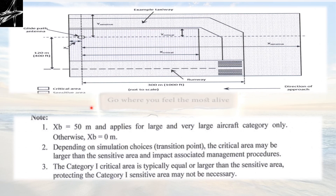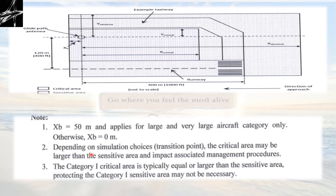One area that remains is behind the Glide Path. The Glide Path antenna is here, the runway and threshold are ahead, and the aircraft is heading in to land — so all previously defined areas are in front. The area behind is defined as Xb: Xb is 50 meters and applies for large and very large aircraft categories only; otherwise Xb is 0. Depending on simulation choices and transition point, the critical area may be larger than the sensitive area and impact associated management procedures. The CAT 1 critical area is typically equal to or larger than the sensitive area, so protecting the CAT 1 sensitive area may not be necessary.